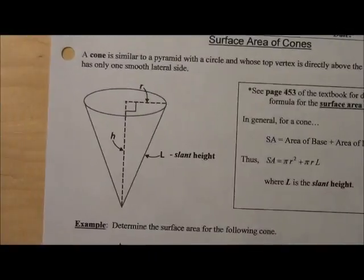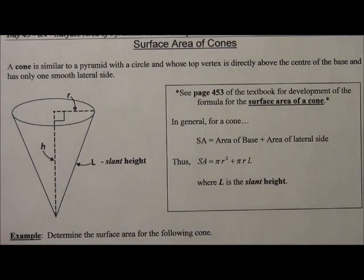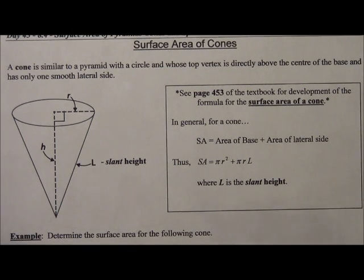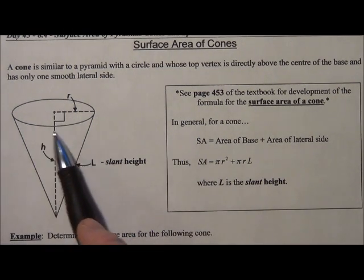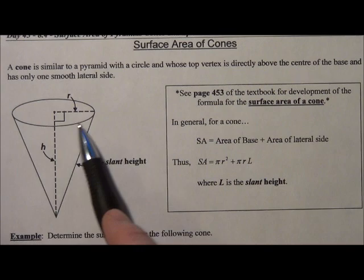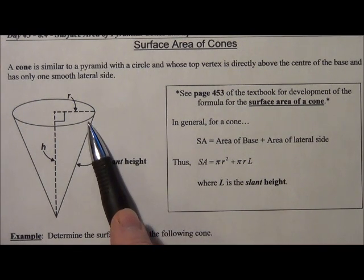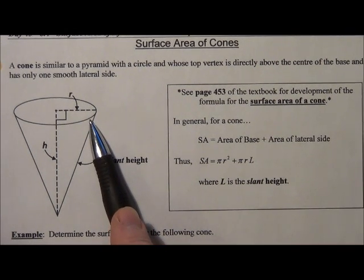Let's go on to cones then. So a cone is similar to a pyramid. You can sort of see the resemblance in their shapes. But instead of having a polygon for the base, a cone has a circle for a base.